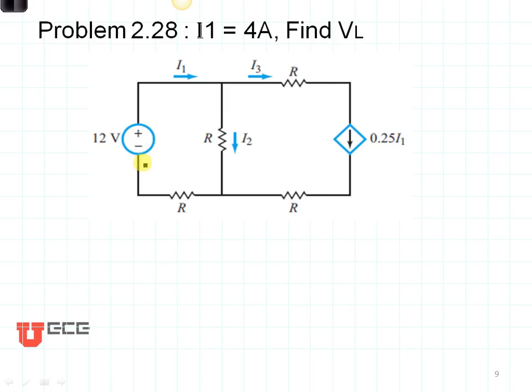Here's a final example. In this case, we have a VS1 and we have a dependent source. Since we have only one independent source, there's no sense in applying superposition in this case. Just apply a combination of voltage and current dividers in order to be able to find the voltages and currents in this circuit.